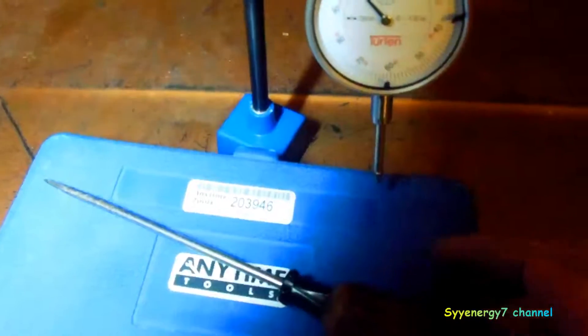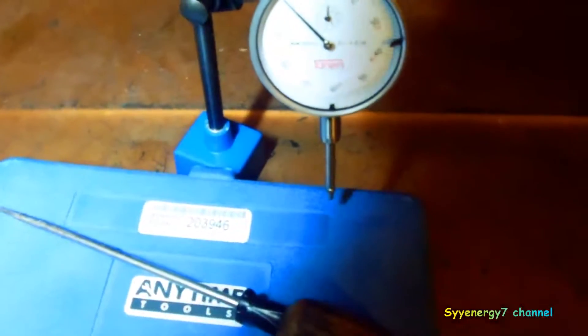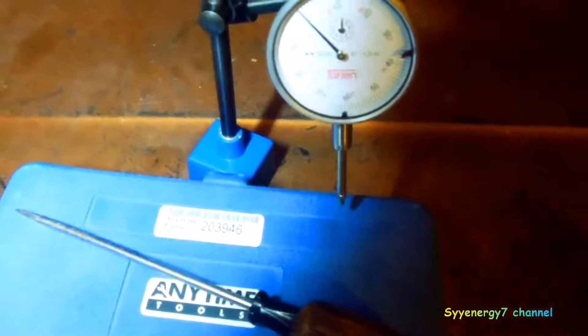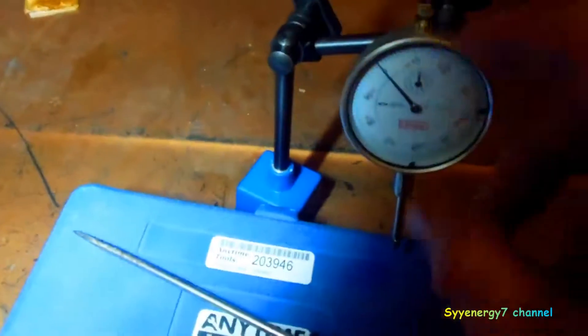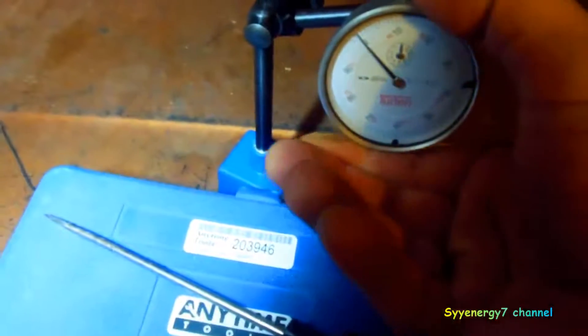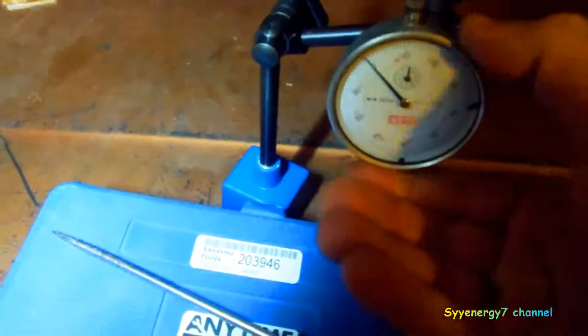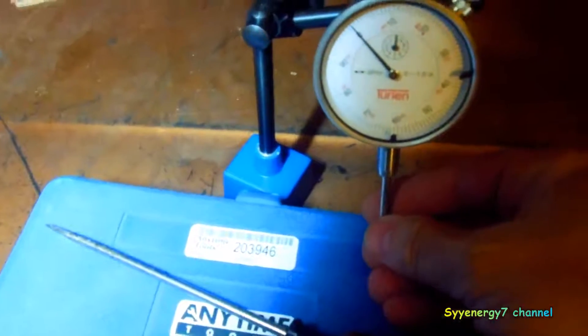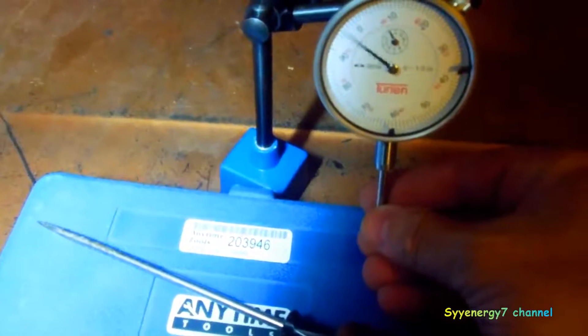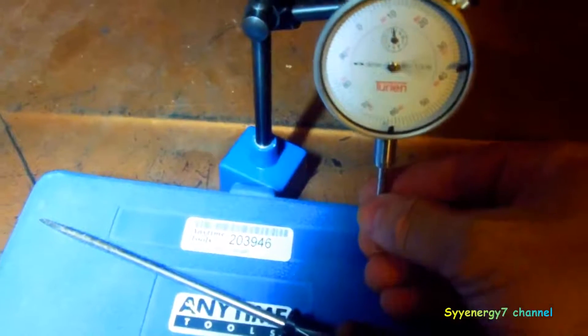You need to have a dial indicator when you can't use a feeler gauge or vernier caliper to see what the distance is. This thing you can turn the wheel to set it at zero, and each revolution of this meter goes in thousandths. It has a counter